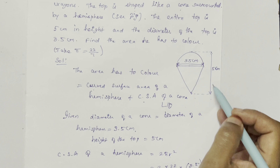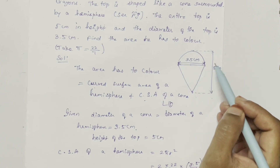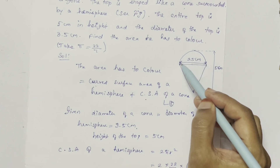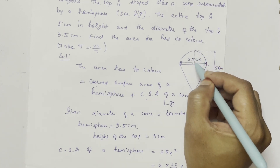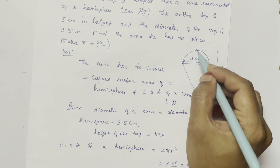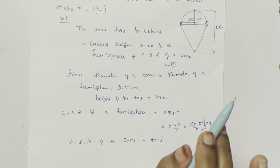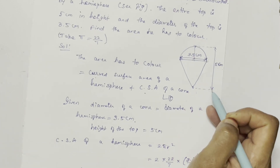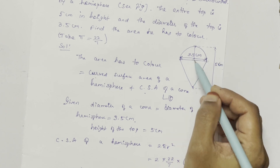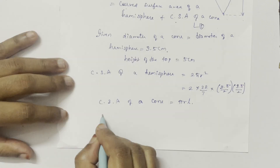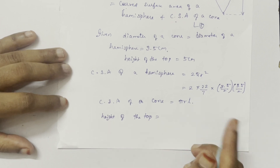We need to find L, the slant height. The total height of the top is 5 cm, and the hemisphere diameter is 3.5 cm, so the radius is 1.75 cm. The height of the cone equals the total height minus the radius of the hemisphere. Height of top equals height of hemisphere plus height of cone, so height of cone equals 5 minus 1.75.